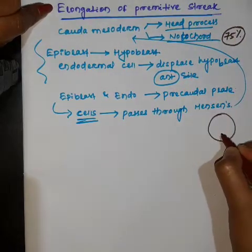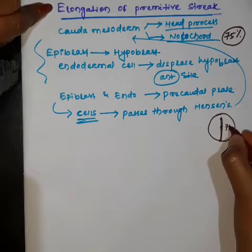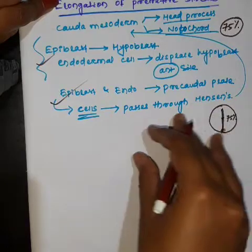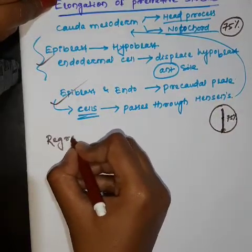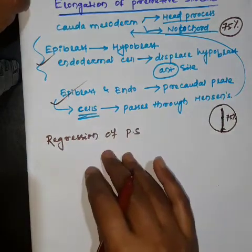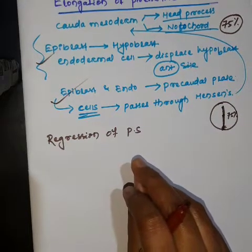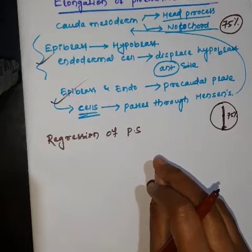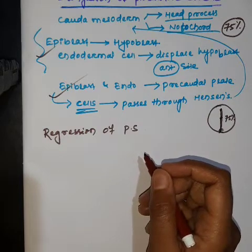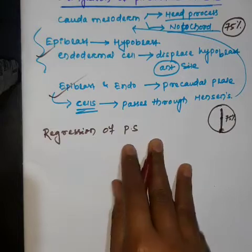The primitive streak develops from the posterior to anterior side and moves towards the center, then upward — almost 75 percent elongation occurs. Now, what is the fate of the remaining part of the primitive streak? That is called regression of the primitive streak. Everything in chick embryo development depends on the primitive streak during gastrulation, just as the blastopore lip is homologous to the primitive streak. We must focus on primitive streak regression.